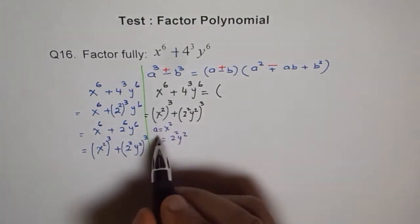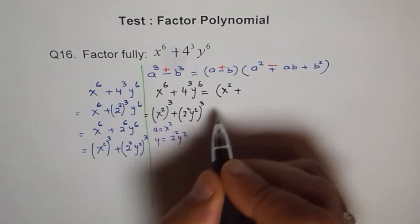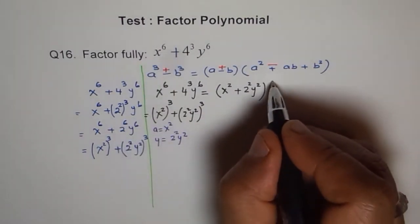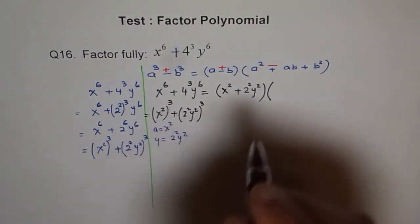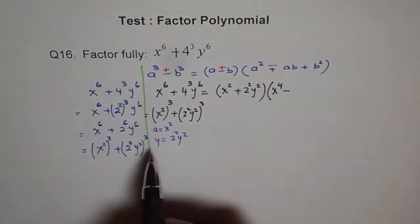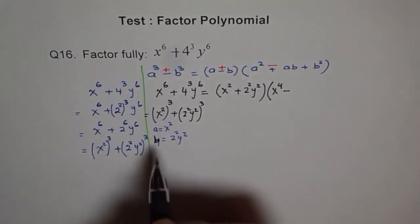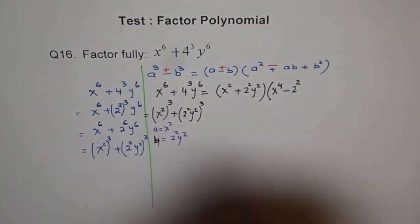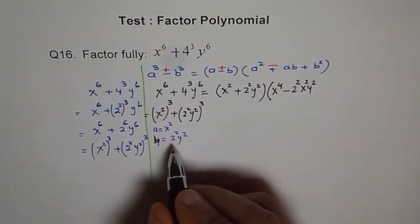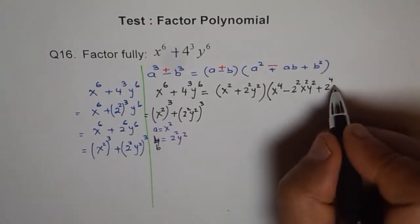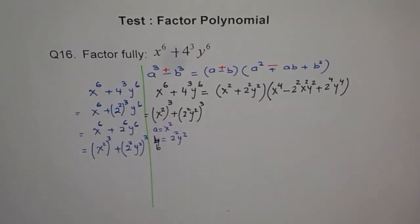So for a plus b: a is x square, plus 2 square y square. Times a square: x squared squared is x to the power of 4. Since we start with plus, we get minus here for the ab term — so we write 2 square x square y square. Plus b square, which is 2 to the power of 4 times y to the power of 4. That is the factoring of our sum of cubes.